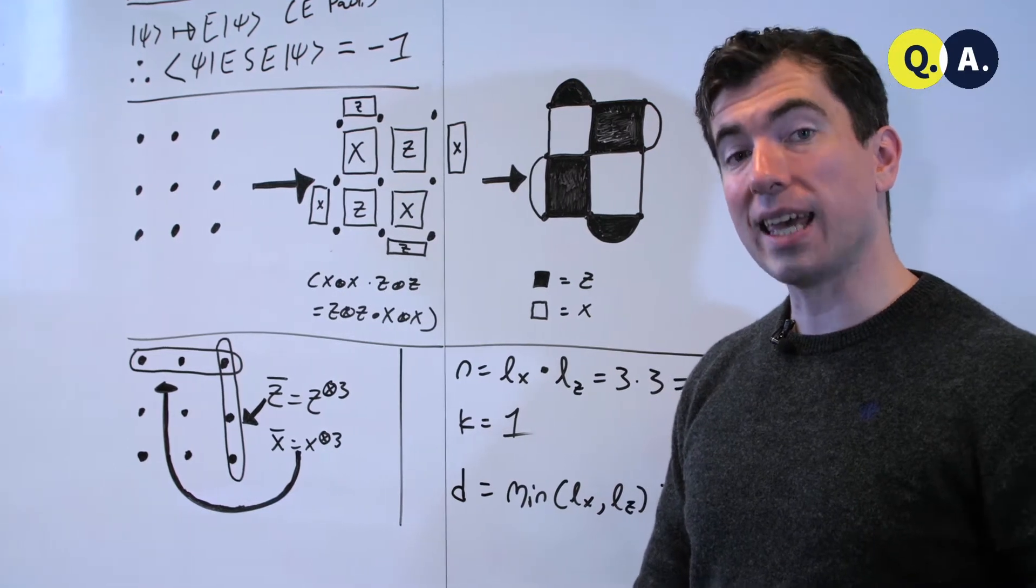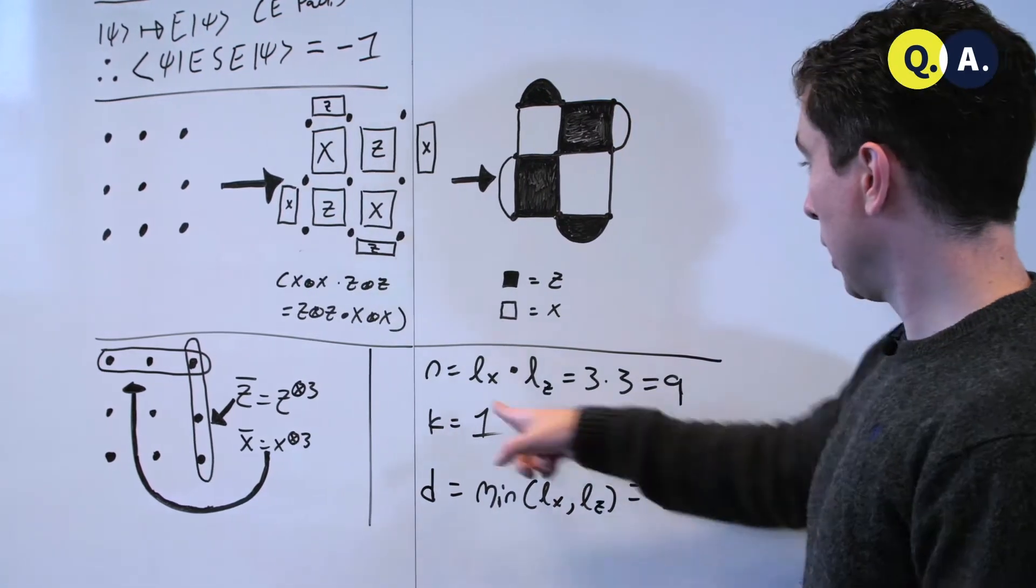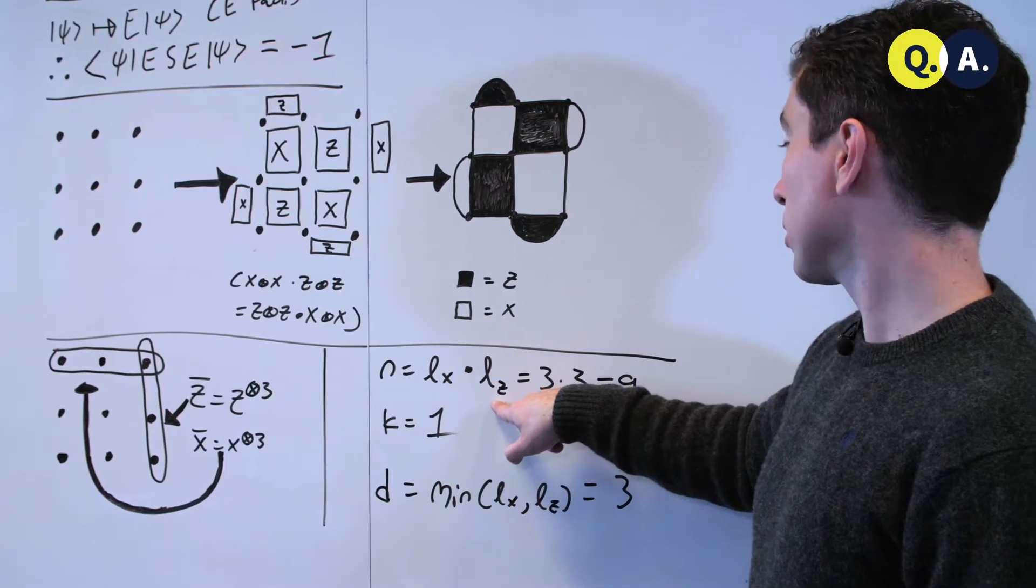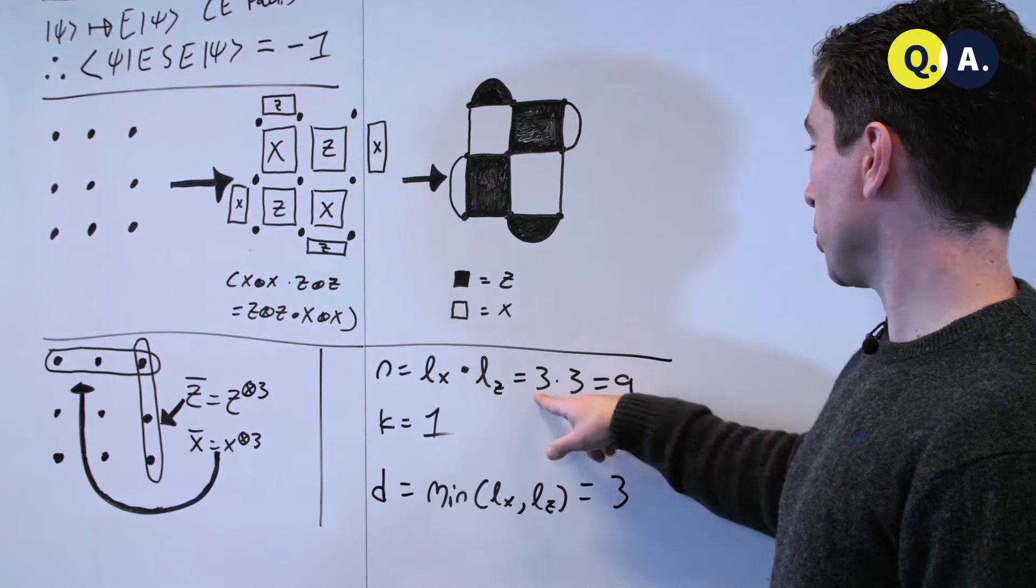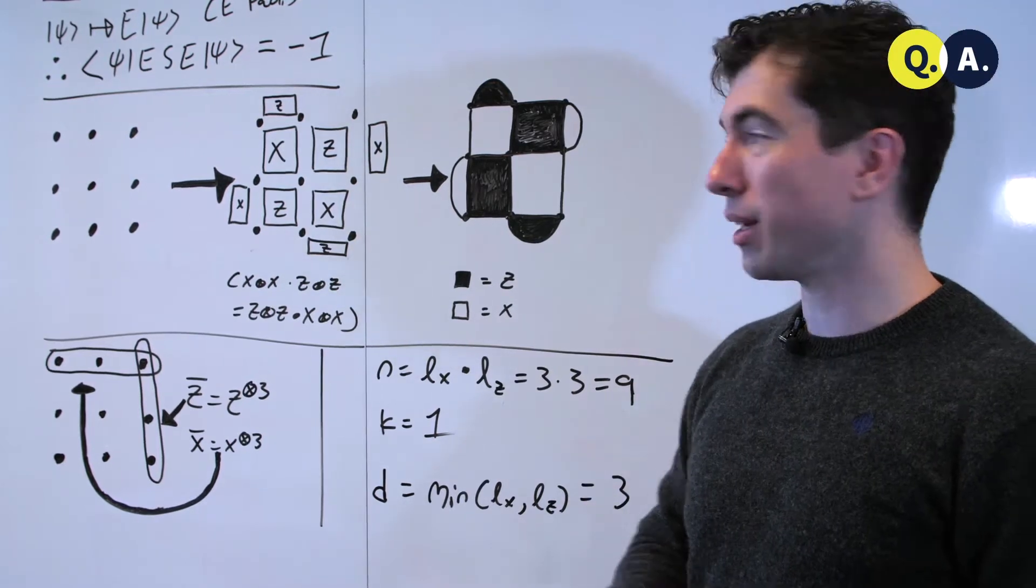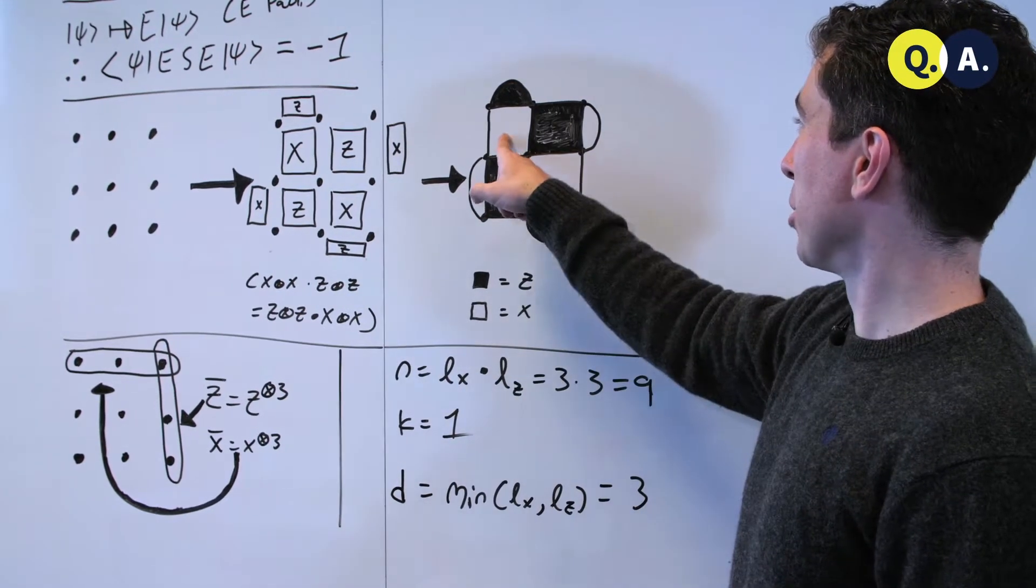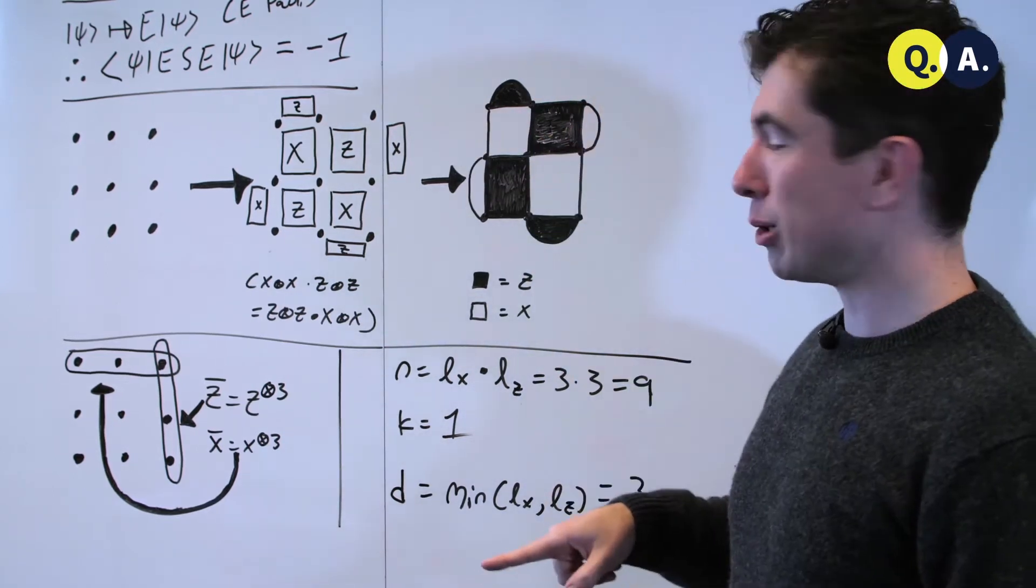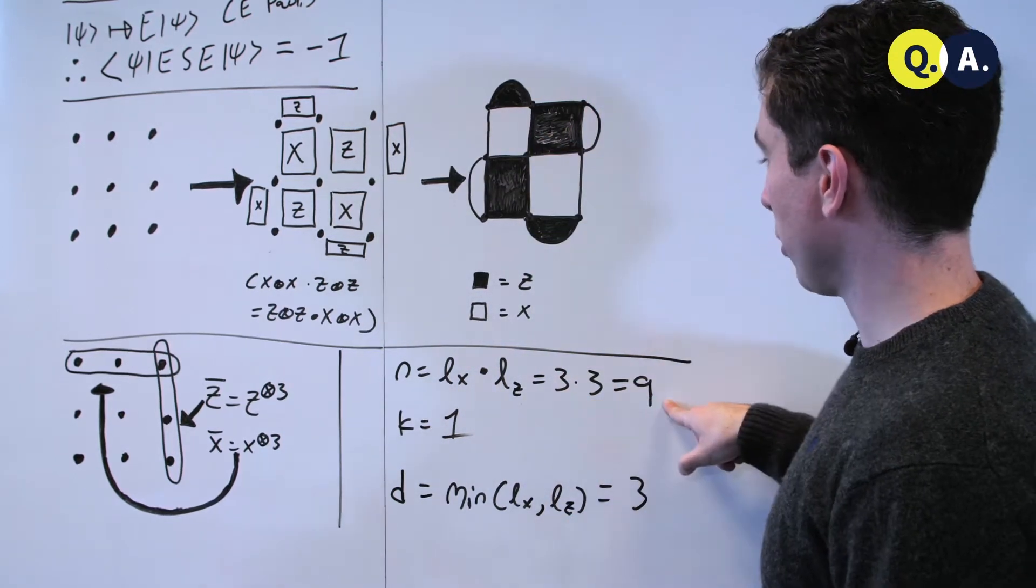How do you calculate n, k, and d for a surface code? n is simply the length in the x direction times the length in the z direction. So in this case it's 3 times 3, which is 9. An important thing to remember is not to count the number of squares that are in a row, but rather the number of qubits that are in a row. So here we have 9 total.